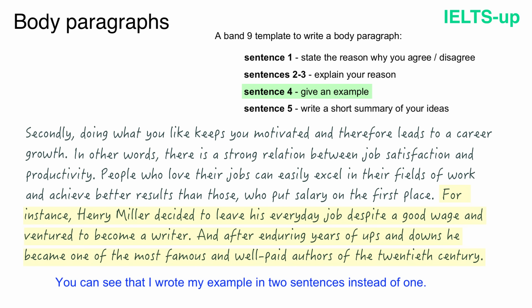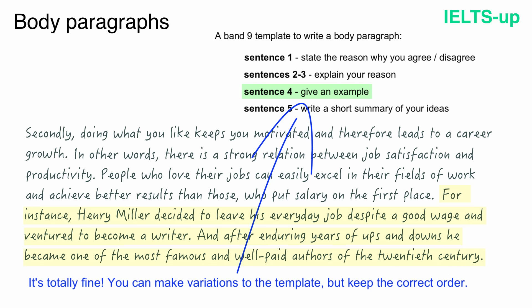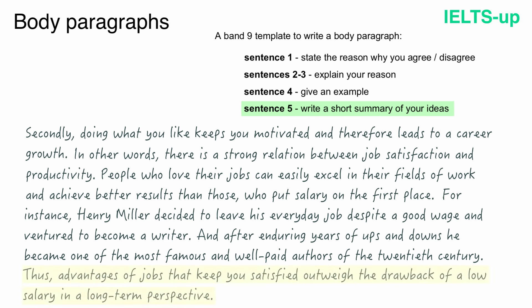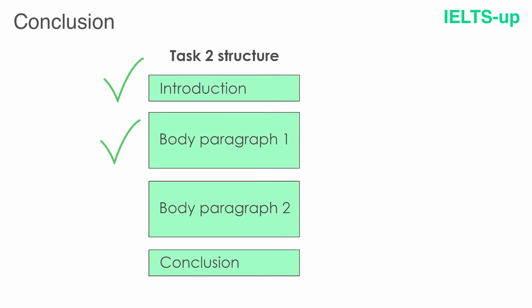You can see that I wrote my example in two sentences instead of one — it's totally fine. You can make variations to the template, but keep the correct order. And now we have to write the last sentence, where we sum up all the ideas of this paragraph to reinforce our opinion. Here is how I wrote it: 'Thus, advantages of jobs that keep you satisfied outweigh the drawbacks of a lost salary in a long-term perspective.' Well done — we have finished our second body paragraph.